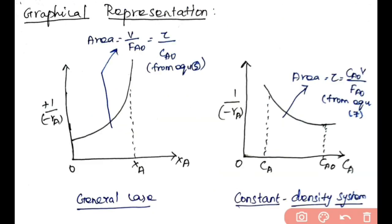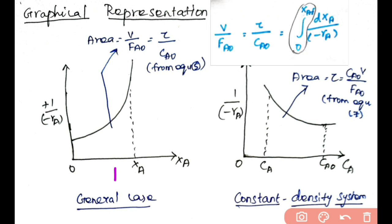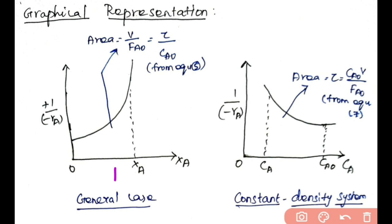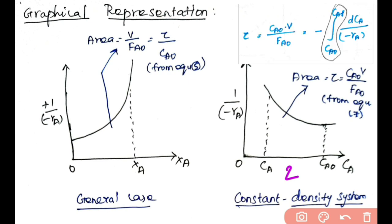Finally, let's look at the graphical representation of the ideal plug flow reactor. Graph 1 is for the general performance equation: the x-axis is XA (0 to XAF), the y-axis is 1/(−rA), and the area under the curve gives V/FA0 = τ/CA0. Graph 2 is for the constant density system, where the x-axis is in terms of concentration CA and the y-axis is 1/(−rA). Here a negative slope is obtained because τ = CA0·V/FA0 = −∫_{CA0}^{CAF} dCA/(−rA).